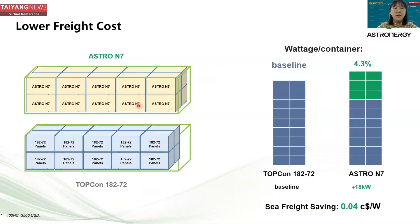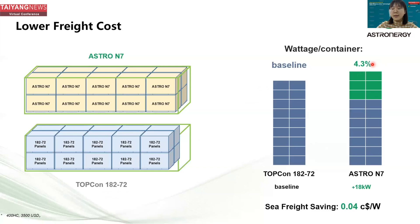Lower freight cost — as mentioned at the beginning, the rectangular wafer module is designed to better utilize container space and reduce freight costs. Compared to the 182×72 module, our rectangular wafer module can increase the wattage per container by 4.3%, which is 18 kilowatts. The freight cost saving is 0.04 cents per watt.